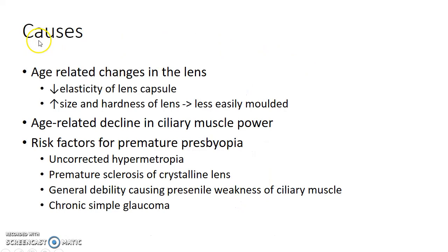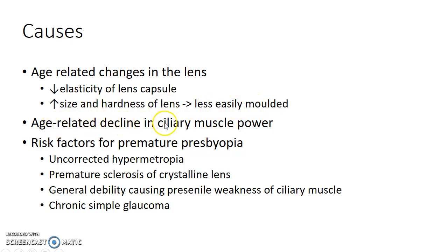Now let us see about the causes of presbyopia. Presbyopia is due to age-related changes in the lens like decreased elasticity of lens capsule and increased size and hardness of lens. This causes the lens to be less easily molded. Age-related decline in ciliary muscle power can also lead to presbyopia.